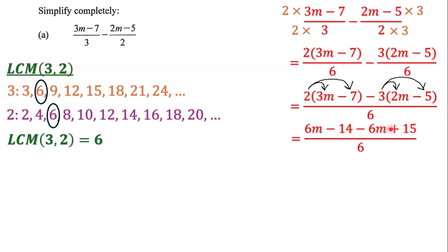Next, we group the like terms. We have 6m minus 6m, and then negative 14 plus 15. 6m minus 6m is 0m, and negative 14 plus 15 is positive 1.